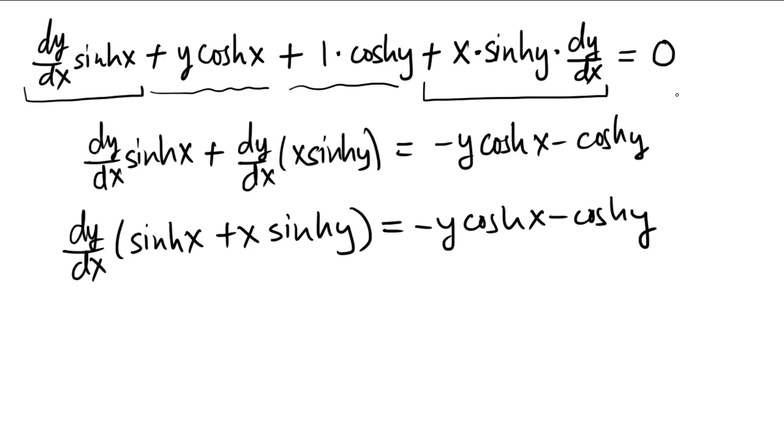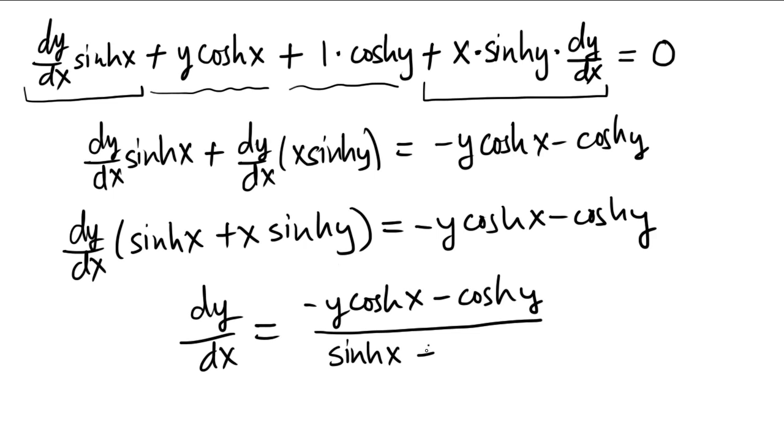Now, so if I divide both sides by this quantity right here, I conclude that dy/dx is this over this. And that's the derivative. That's the implicit derivative. Notice that in this derivative, there's x's and y's floating around. Whereas usually with derivatives, it's a formula that's completely in the variable x.